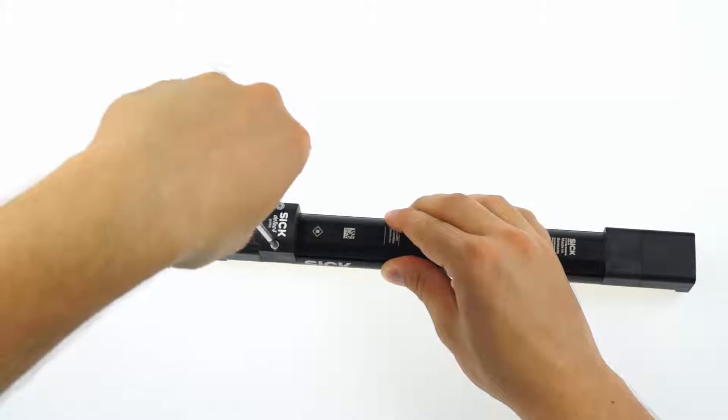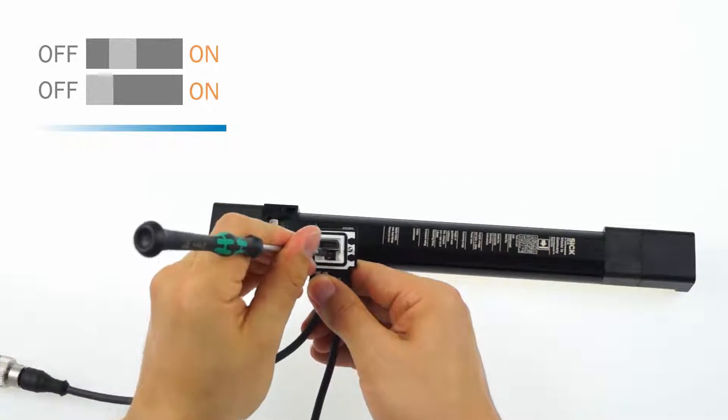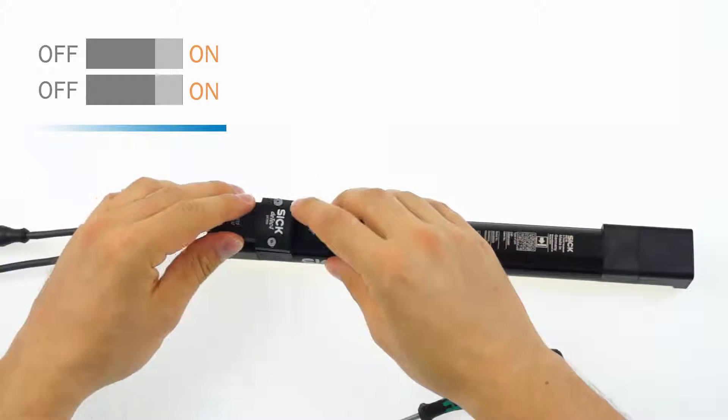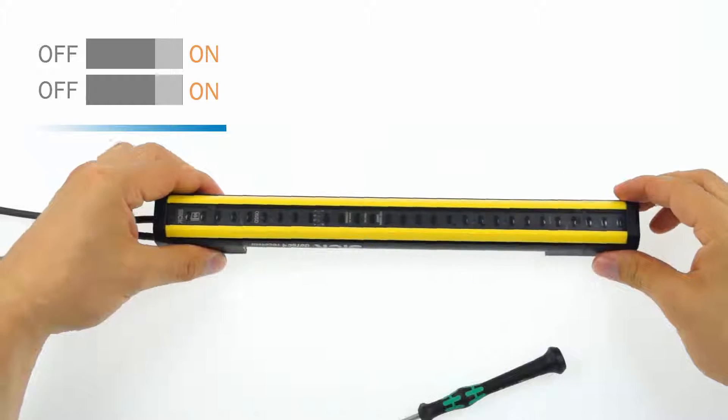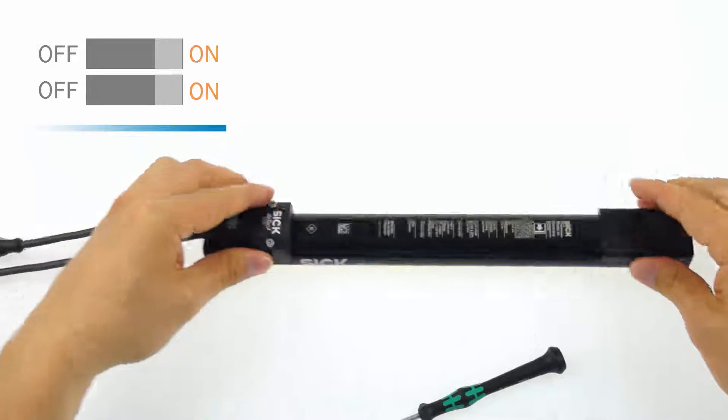In the first step detach the system plug. Set both of the DIP switches to ON and put the plug back on the device. Switch on the power. The field LEDs are flashing green and yellow now. Disconnect the device from the power supply within 10 seconds.